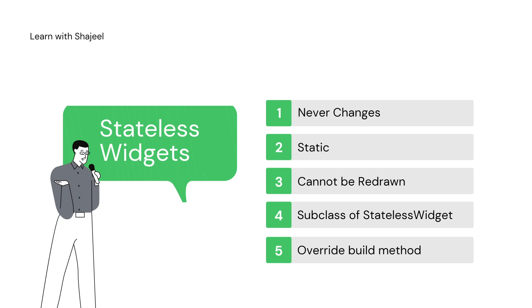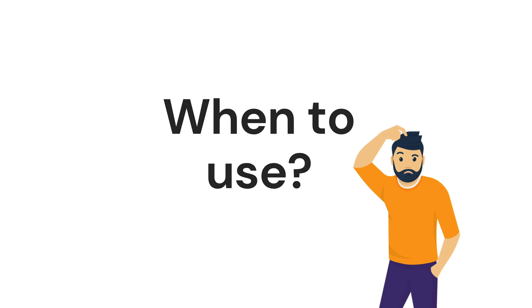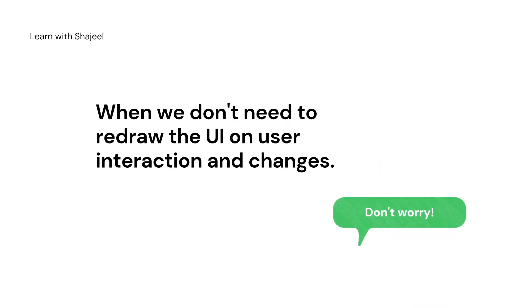Let's look at some examples of the stateless widget. If you want to show an icon, that can be a stateless widget. An icon button is an example of a stateless widget, and text is also an example of a stateless widget. There are many stateless widgets available inside the Flutter SDK, and we can create our own stateless widgets as well. We use stateless widgets where we don't need to redraw the UI on user interaction or when an event occurs.